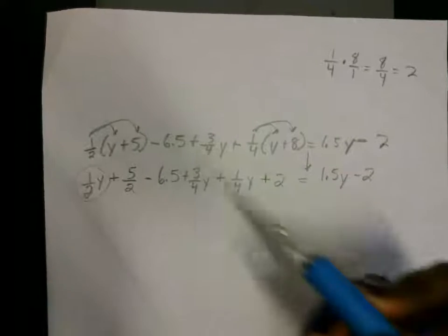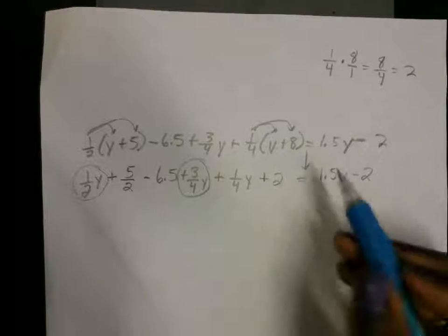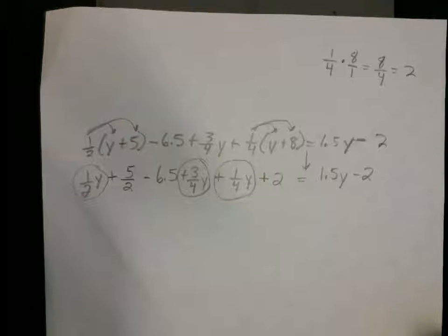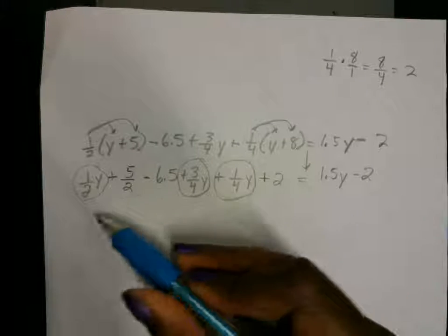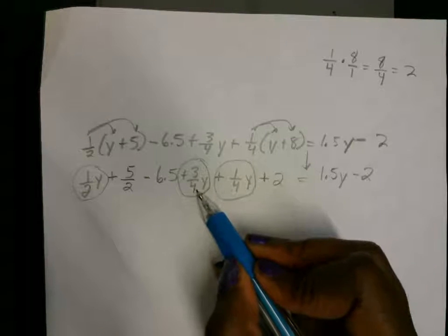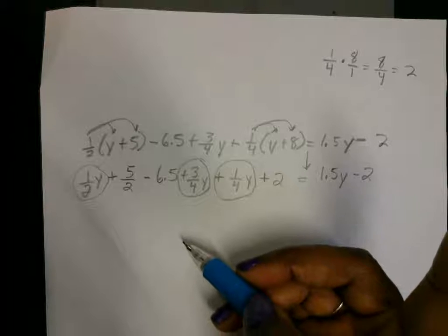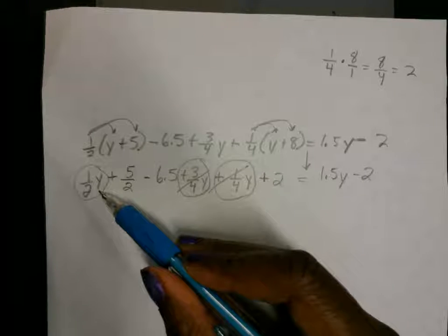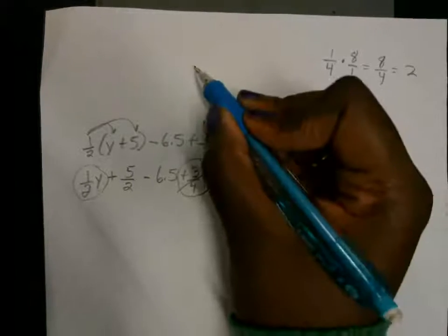So let's combine the terms that are alike. Let's circle them. We got the one-half y, we got the three-fourths y, and we got the one-fourth y. So we're going to combine those terms together. When we add these, we're going to add the ones that are easiest to add, the ones that have the common denominator. So this denominator here is 4. We add the numerators. That gives us 4 over 4, which is 1y.